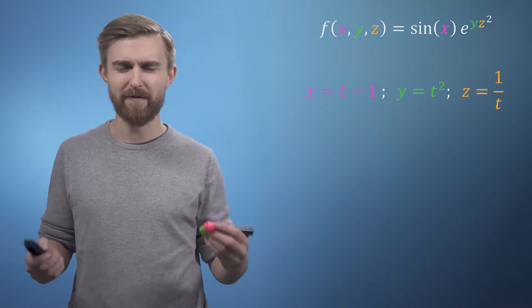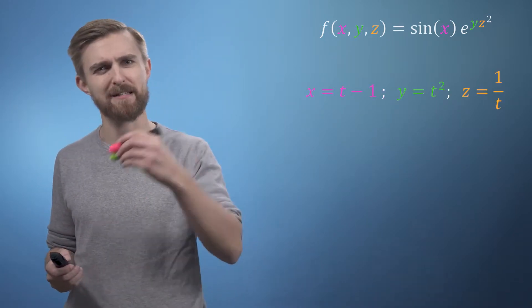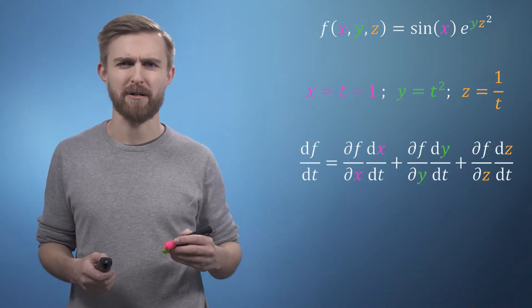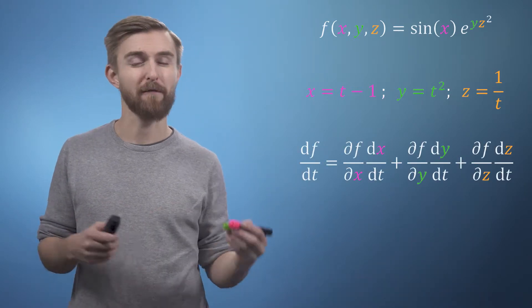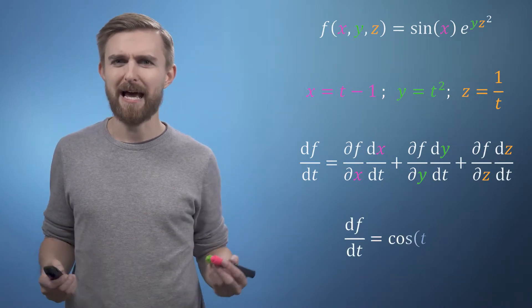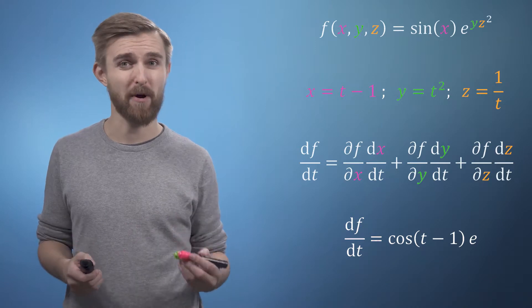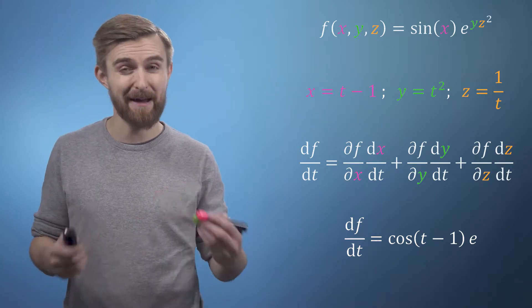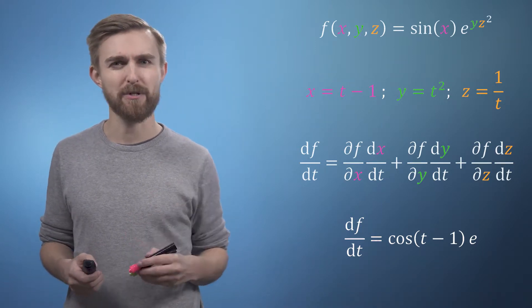then if we want to calculate the derivative of f with respect to t, we can use this expression, which is simply the sum of the chains relating f to t through each of its three variables. This allowed us to calculate the result in a piecewise manner, rather than substituting everything in at the start, and computers are really good at solving piecewise problems quickly.